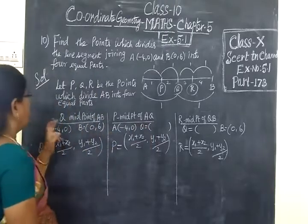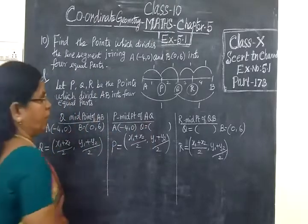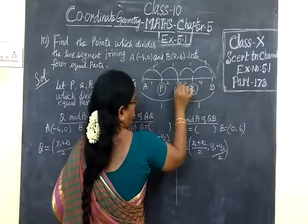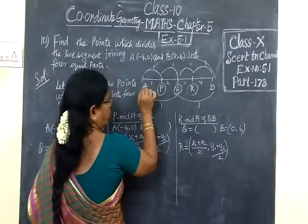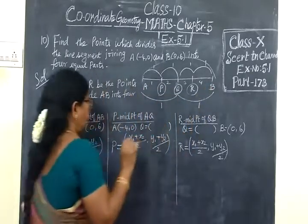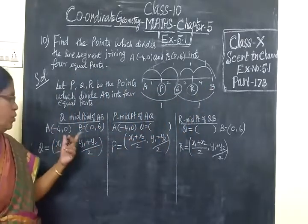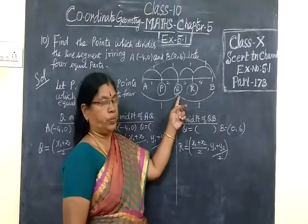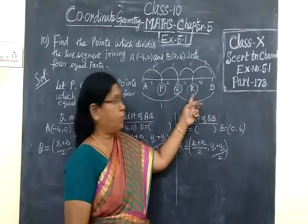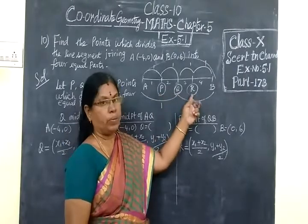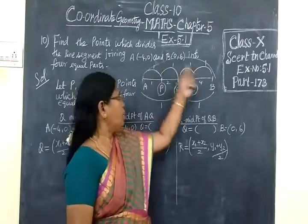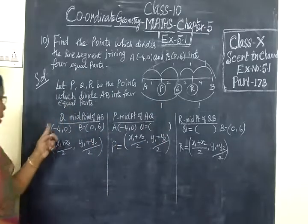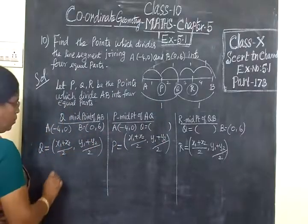So we're considering three cases. See that Q is the midpoint of A and B. Q is the midpoint of AB. So we are taking the coordinates A and B, and Q is the midpoint of AB. First we are going to find Q, but P and R are unknown.